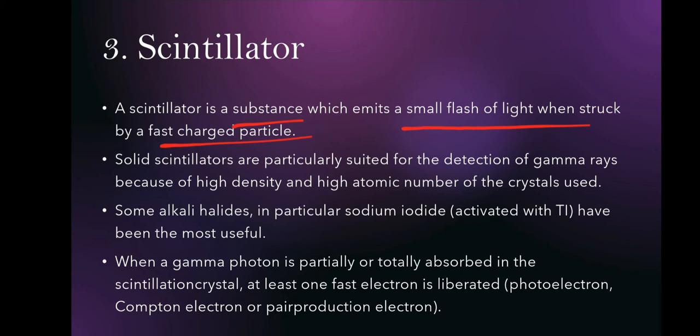Solid scintillators are particularly suited for the detection of gamma rays. Solid scintillators are used because they have high density and high atomic number, and as you know, gamma rays have high penetration. That is why solid scintillators are used for the detection of gamma rays.